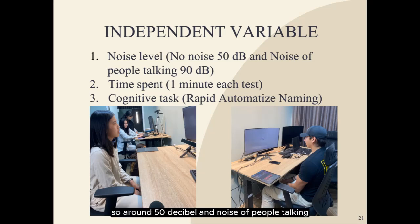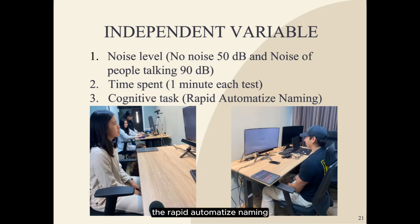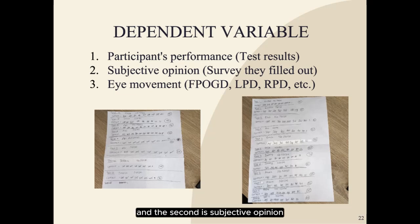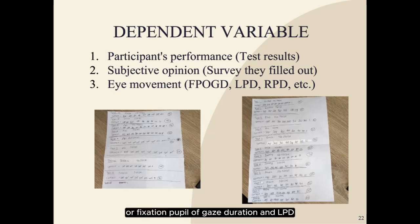We have three independent variables. The first is noise level: no noise at around 50 decibels, and noise of people talking at around 90 decibels. The second is time spent — each test is one minute. The third is the cognitive task, which is Rapid Automatized Naming. The dependent variables are: participants' performance test results, subjective opinion from a survey, and eye movement metrics including FPOGD (fixation point of gaze duration), LPD (left pupil diameter), RPD (right pupil diameter), and others.